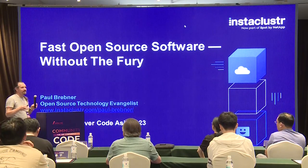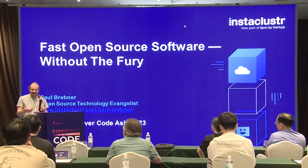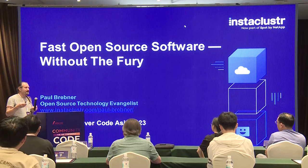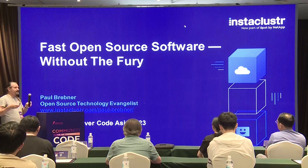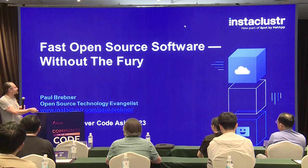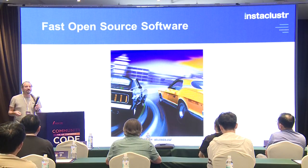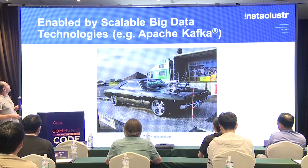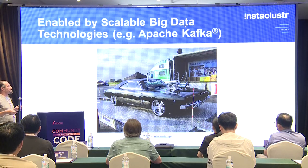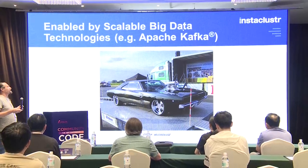Hopefully people know the movie Fast and Furious. I was hoping that's a movie familiar to you in China, and I've borrowed some images and concepts from it to try and explain what can be some quite complicated performance topics. Fast-paced software is a bit like doing some street racing, and you need some appropriate technology — I'm talking primarily about big data technologies, for example Apache Kafka.